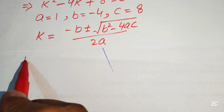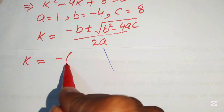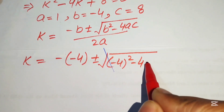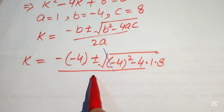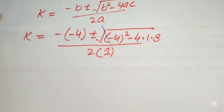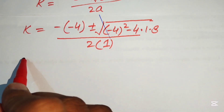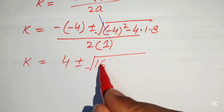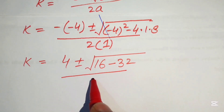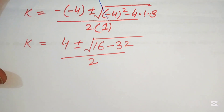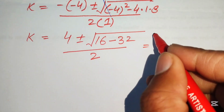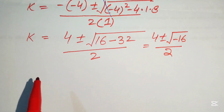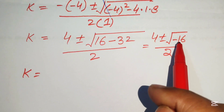Substituting b = −4, a = 1, c = 8: k = [−(−4) ± √((−4)² − 4·1·8)] / (2·1) = [4 ± √(16 − 32)] / 2 = [4 ± √(−16)] / 2.